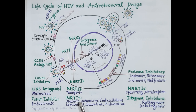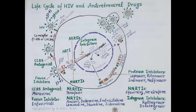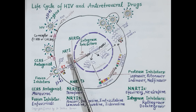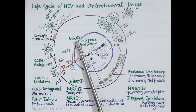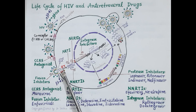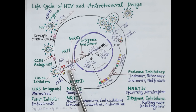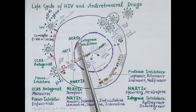Now let's see the classification of antiretroviral drugs. The first category is nucleoside reverse transcriptase inhibitors — NRTIs. These drugs include abacavir, didanosine, emtricitabine, lamivudine, stavudine, and zidovudine. Tenofovir is a nucleotide reverse transcriptase inhibitor (NtRTI). NRTIs and NtRTIs form the backbone of antiretroviral therapy. These drugs inhibit the enzyme reverse transcriptase and thereby prevent the formation of proviral DNA from viral RNA.